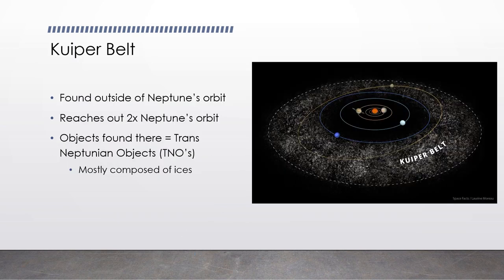The Kuiper Belt is the zone just outside Neptune's orbit, extending to about twice Neptune's orbital distance. It is filled with trans-Neptunian objects, or TNOs, mostly composed of ices. This is where Pluto is located, as well as other dwarf planets such as Sedna.